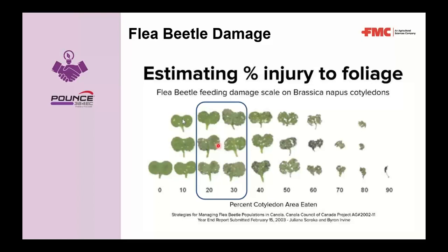With delayed or slower emergence, seed treatment protection will be greatly reduced or running out — they generally provide three or more weeks of control. With cool conditions causing canola to lag, it's important to keep scouting because flea beetle damage will start to occur.